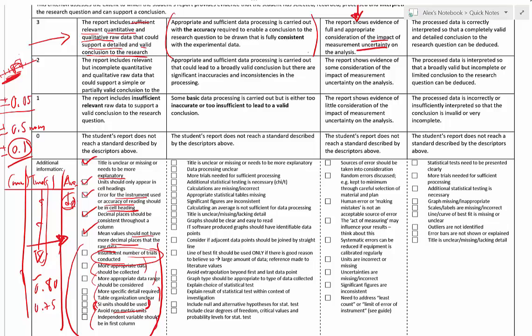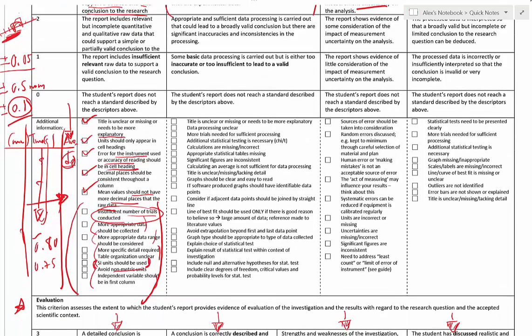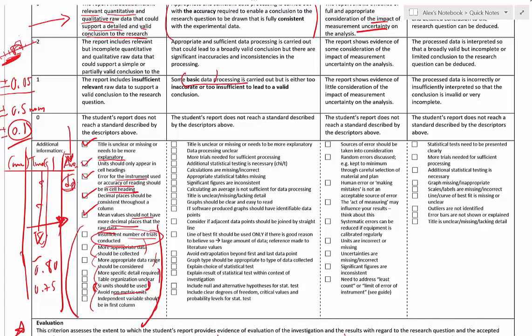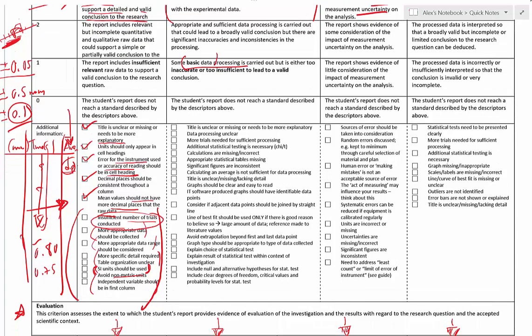For the data analysis part, you likely know how to calculate an average, and if there are repeat trials you'll often include that. However, average alone is probably not enough to be considered great data processing. You should try to do some kind of statistical test — a chi-square test or a t-test — or calculate a correlation coefficient. If you do, include a clearly titled table showing how you calculated it.